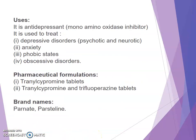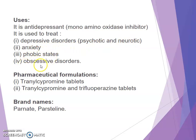Uses: tranylcypromine is an antidepressant and mainly a monoamine oxidase inhibitor, used to treat depressive disorders, psychotic and neurotic anxiety, phobic states, and obsessive disorders. Pharmaceutical formulations include tranylcypromine tablet and tranylcypromine with trifluoperazine tablet. Brand names are Parnate and Parstelin.